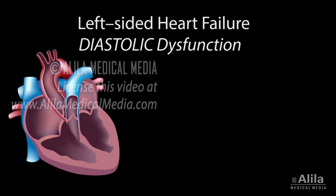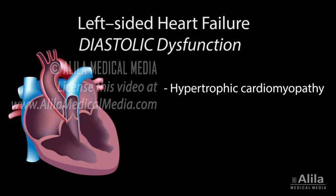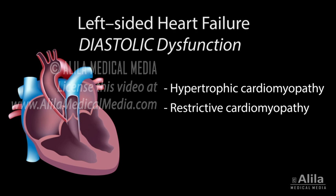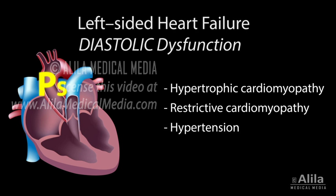Examples of conditions that can lead to diastolic heart failure include hypertrophic cardiomyopathy, where the heart muscle grows thicker than usual, leaving less room for blood filling, and restrictive cardiomyopathy, where the heart muscle becomes rigid and unable to stretch. Hypertension can also cause diastolic dysfunction indirectly via compensation mechanisms: as higher systemic pressures make it more difficult for the ventricle to pump, the heart compensates by growing thicker muscle, and larger muscle means reduced space for blood filling.